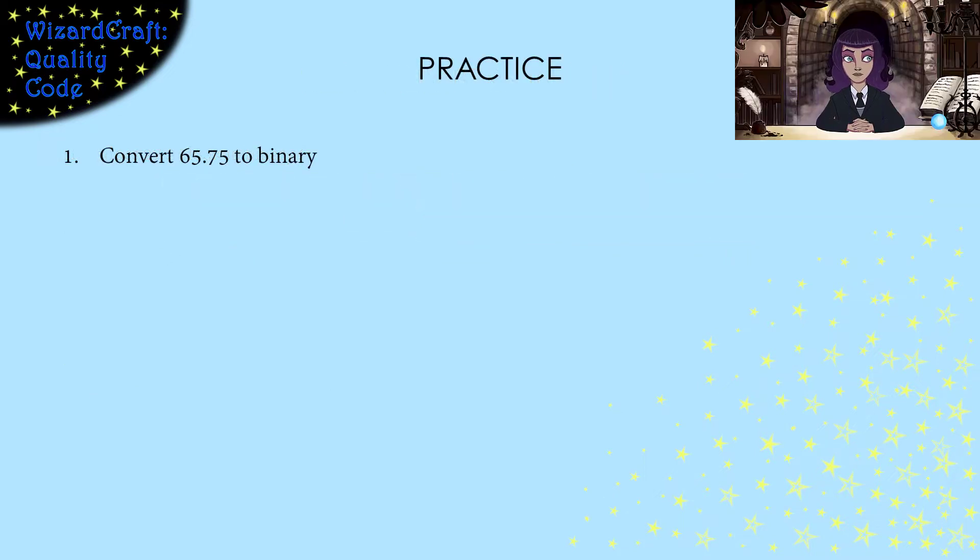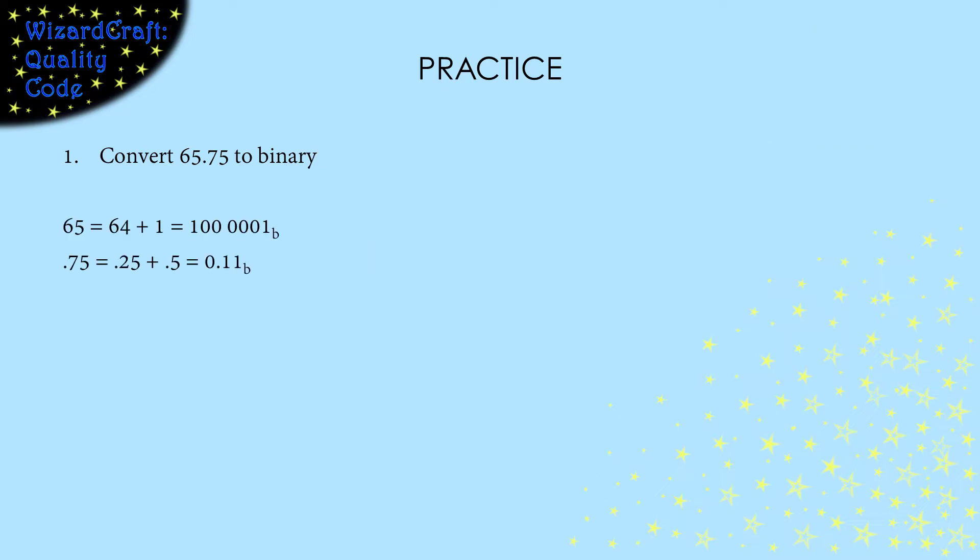Pause the video and try this one by yourself. For this, I just convert the two parts to binary by finding the set of positions whose values sum to the number we want to represent. Turn on those bits, and we have the binary representation.